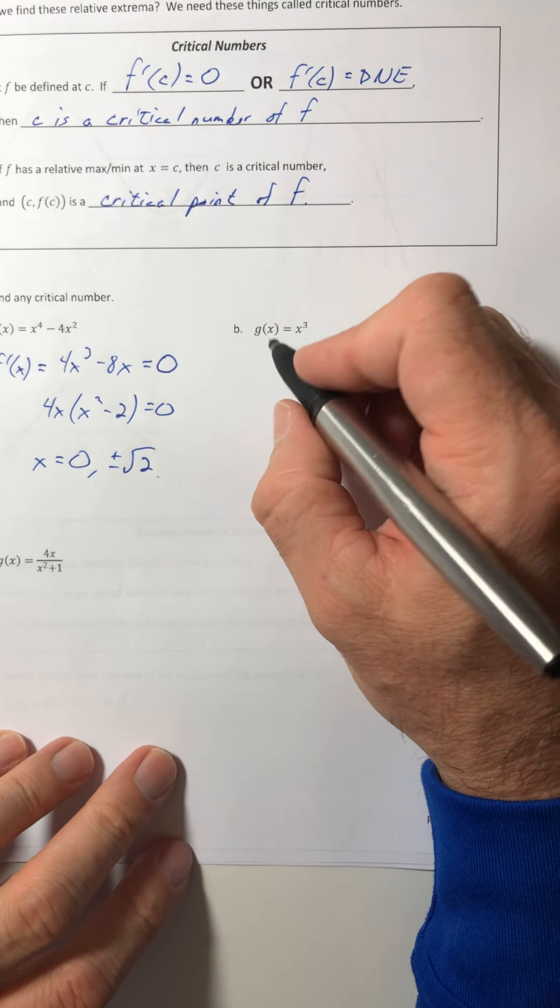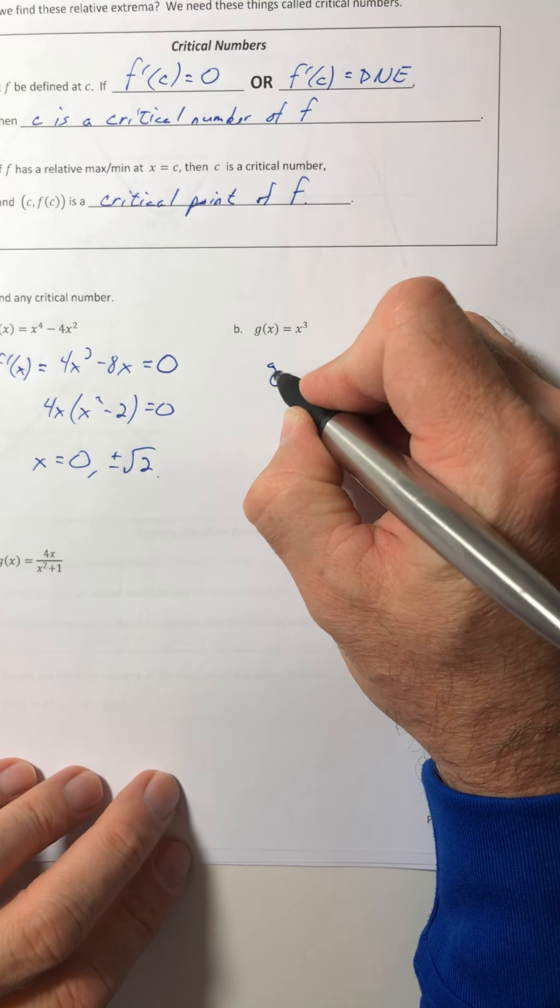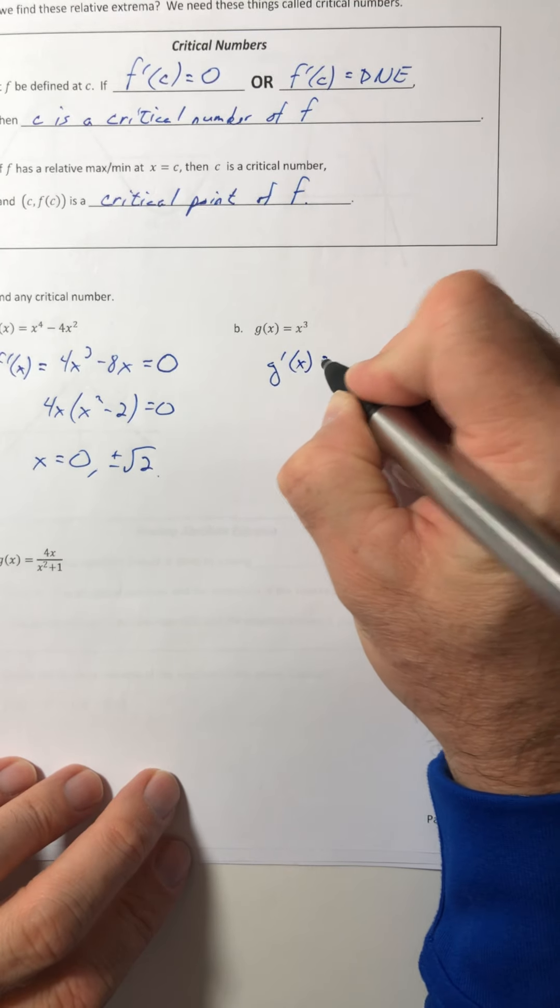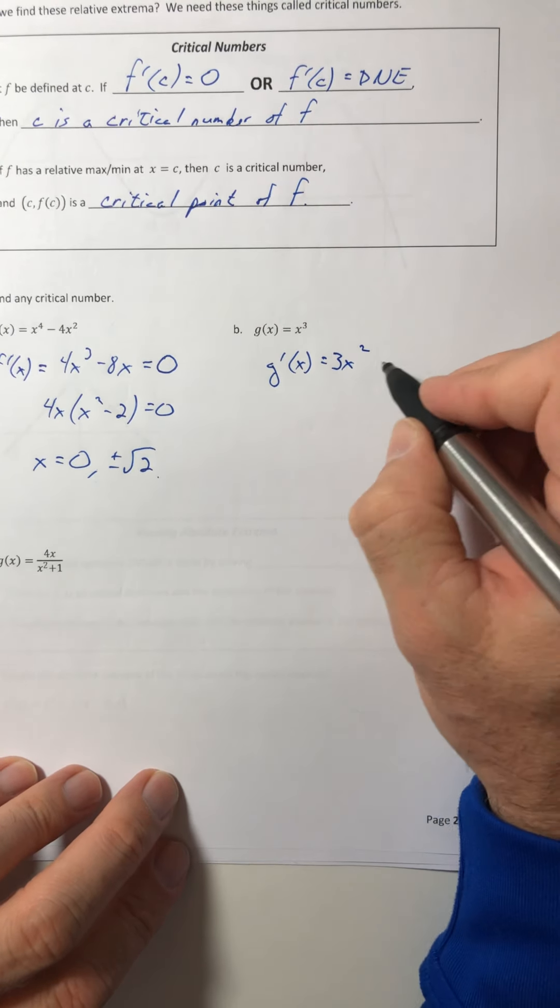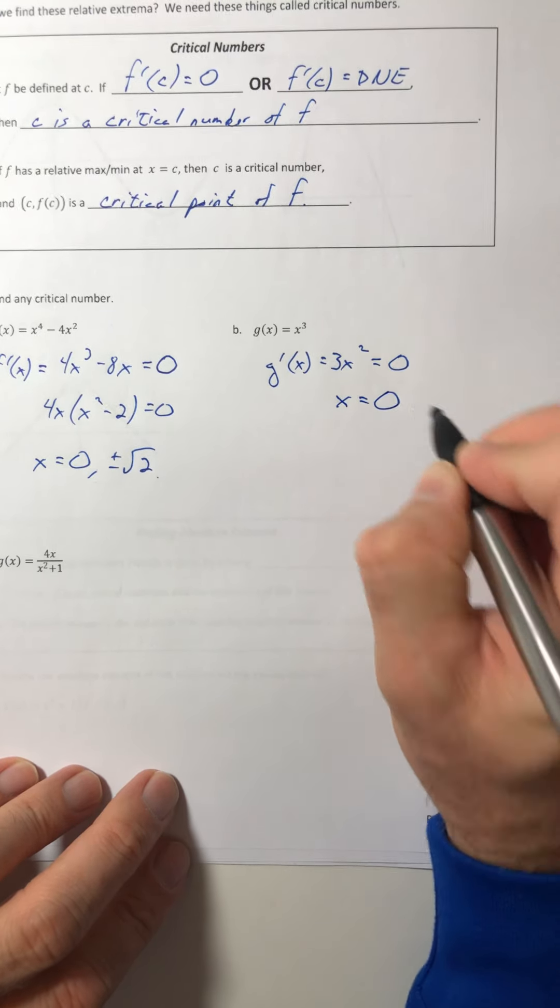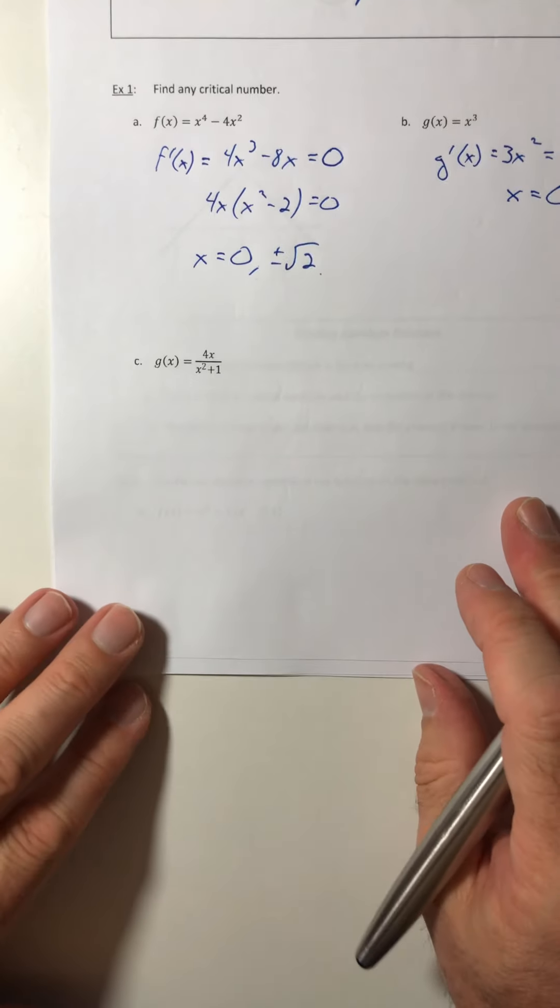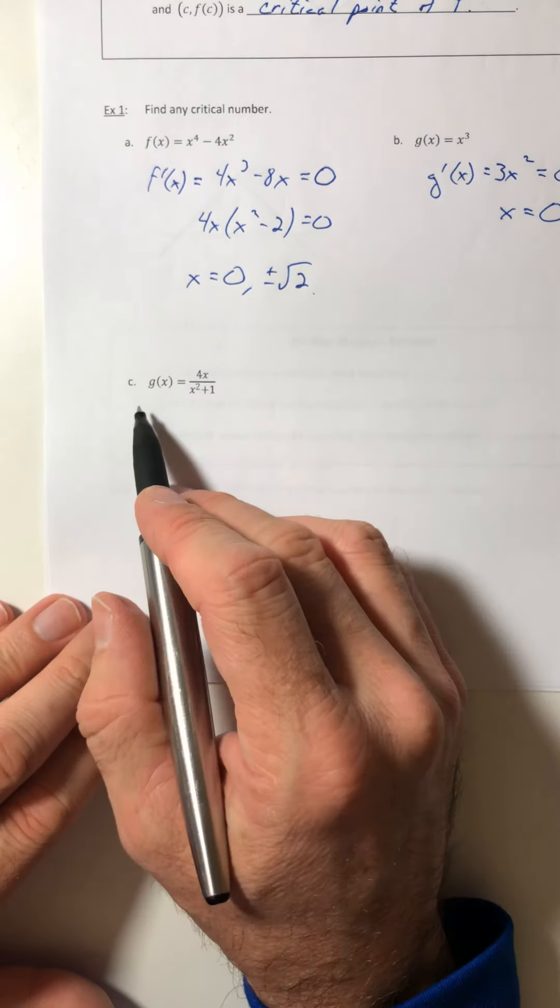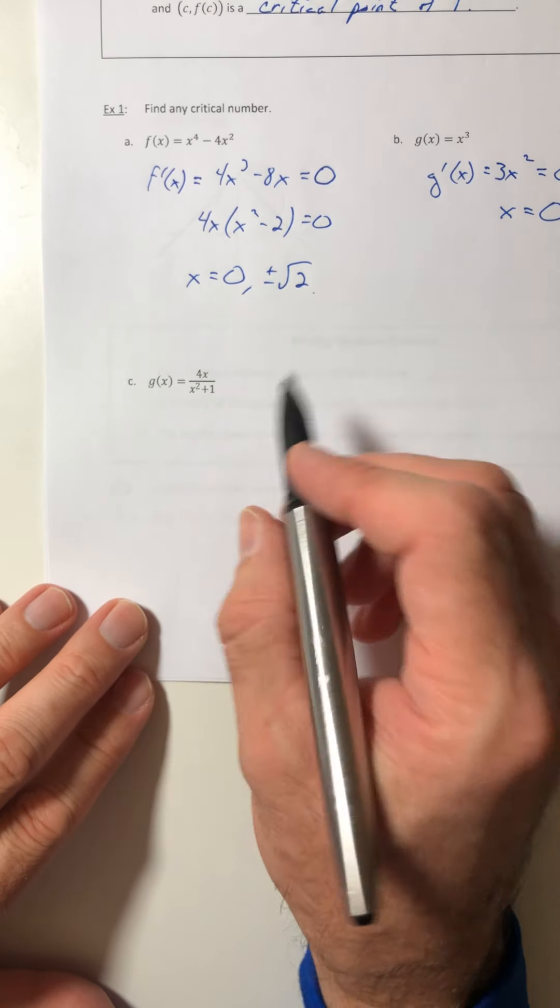Okay, part b, same thing. Get the derivative. 3x². Set it equal to zero, and x is going to equal zero. All right, simple enough until we get to part c. Uh-oh, now you've got to use the quotient rule.